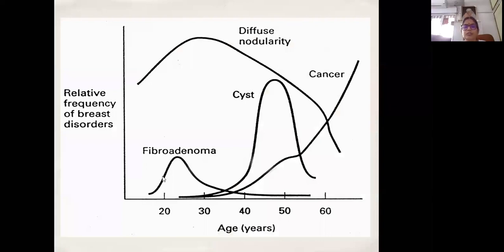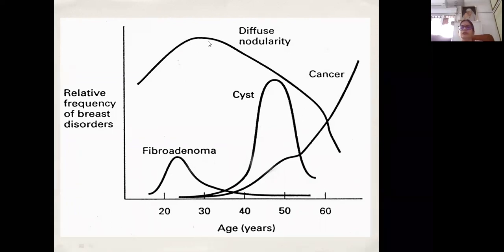On this graph, the incidence of fibroadenoma peaks in the 20s and 30s, whereas cysts peak around the 40s, 50s, and around menopause. Cancer incidence steadily increases from about 35–40 and beyond 60. There is also a diffuse nodularity from aberrations in involution and development that peaks around the mid-30s and tapers down post-menopause.